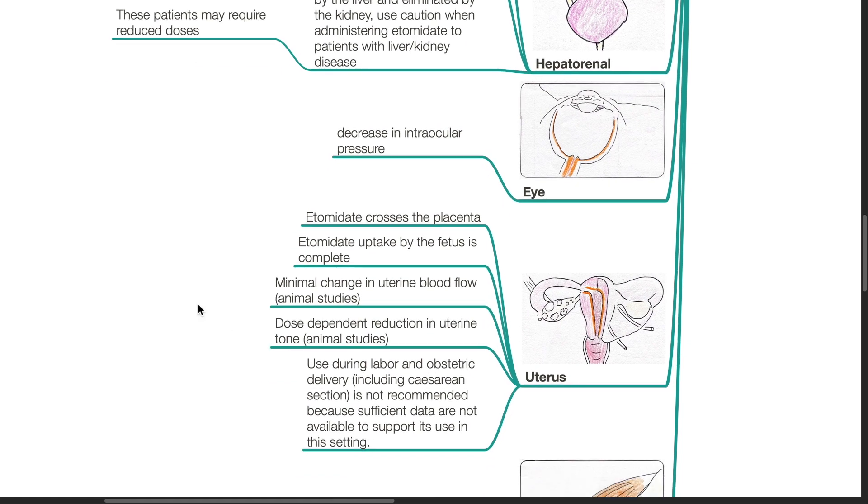In obstetrics, etomidate crosses the placenta and uptake by the fetus is complete. There is minimal change in uterine blood flow and dose-dependent reduction in uterine tone occurs in animal studies. However, its use during labor and obstetric delivery is not recommended because sufficient data are not available to support the use of etomidate in this setting.